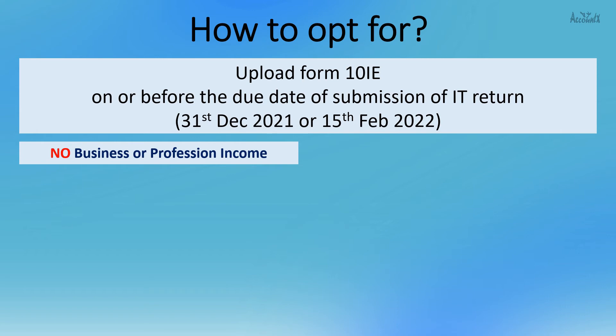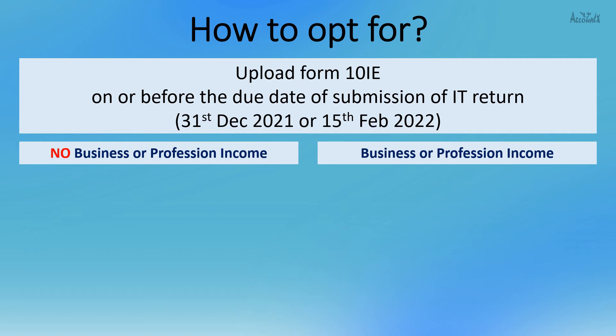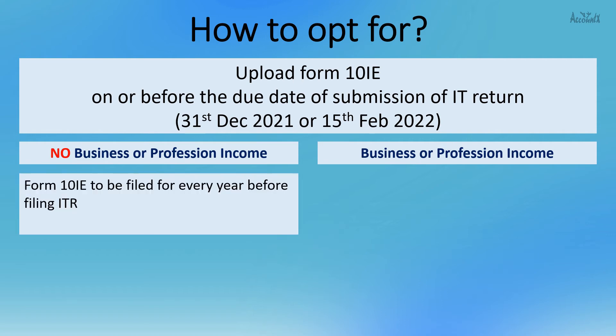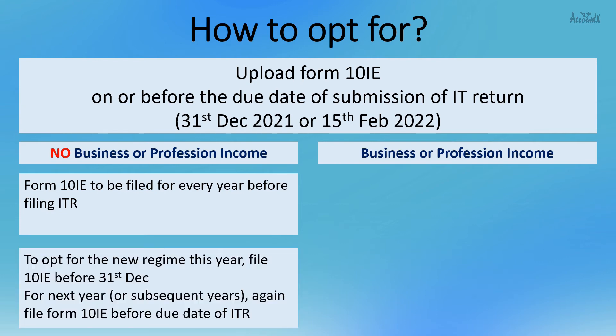The process is slightly different for taxpayers having no business or profession income versus those who do. For taxpayers without business or profession income, Form 10-IE must be filed every year before filing the ITR. If you want to opt for the new regime this year, file Form 10-IE before 31st December. For next year, file it again before the due date. If you do not wish to opt next year, there is no need to file Form 10-IE.